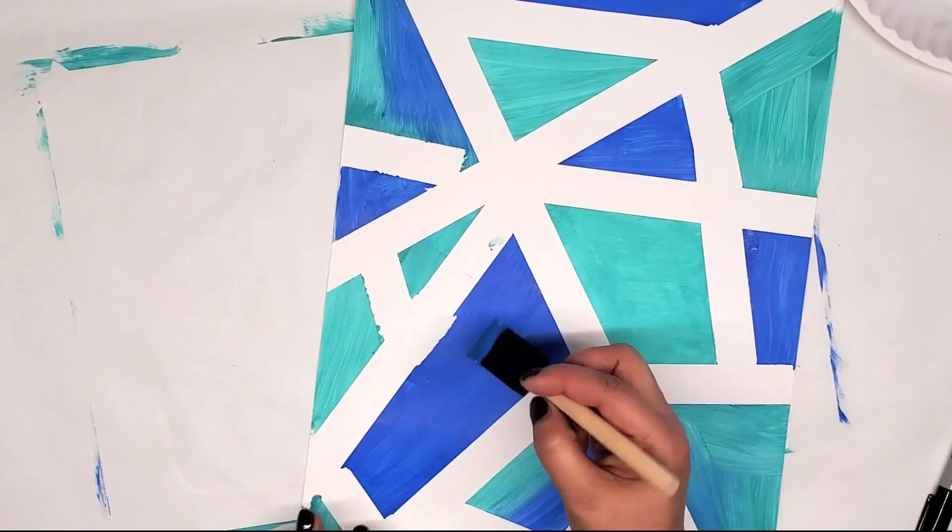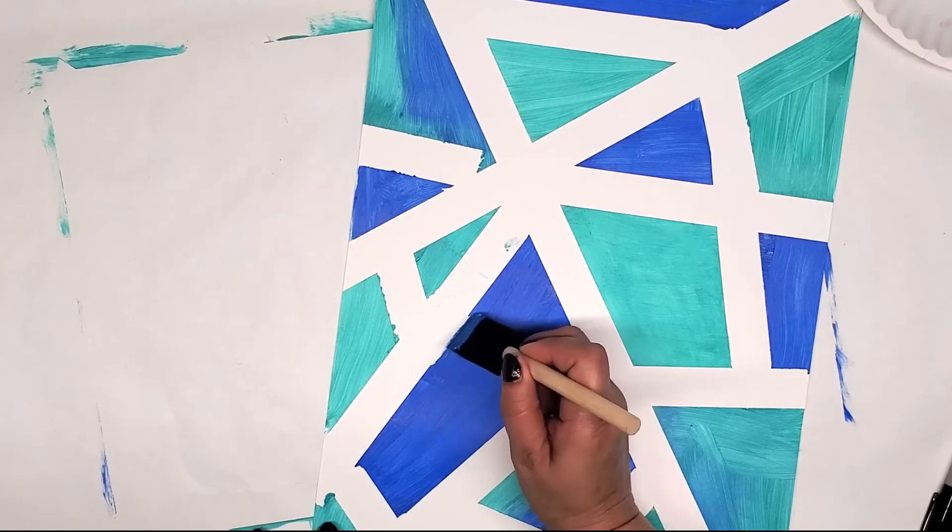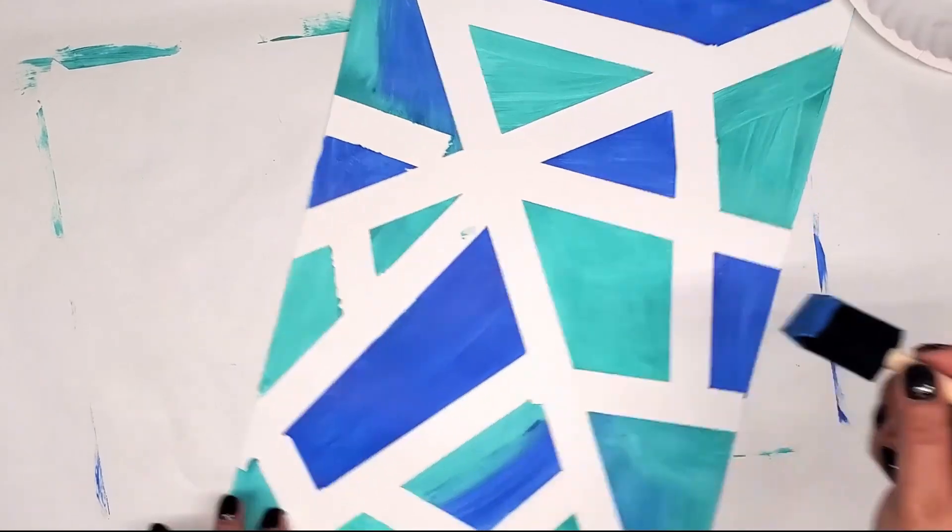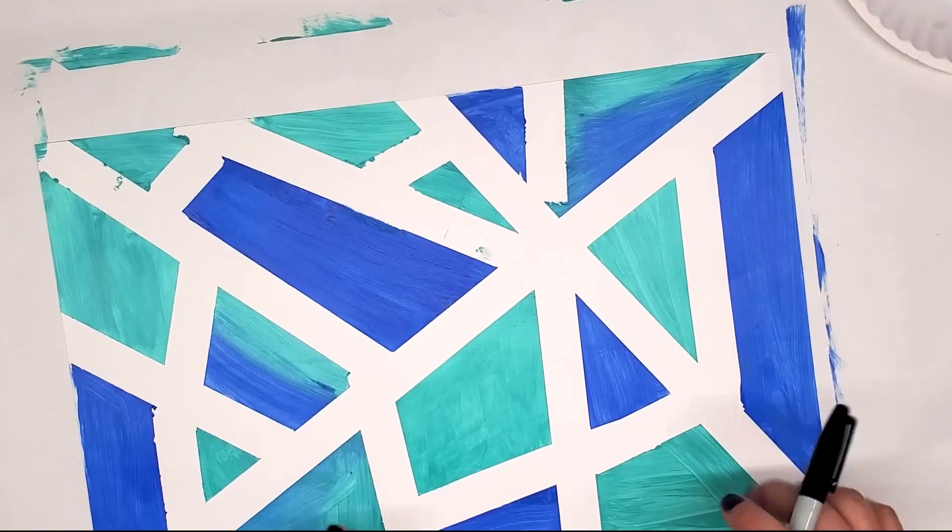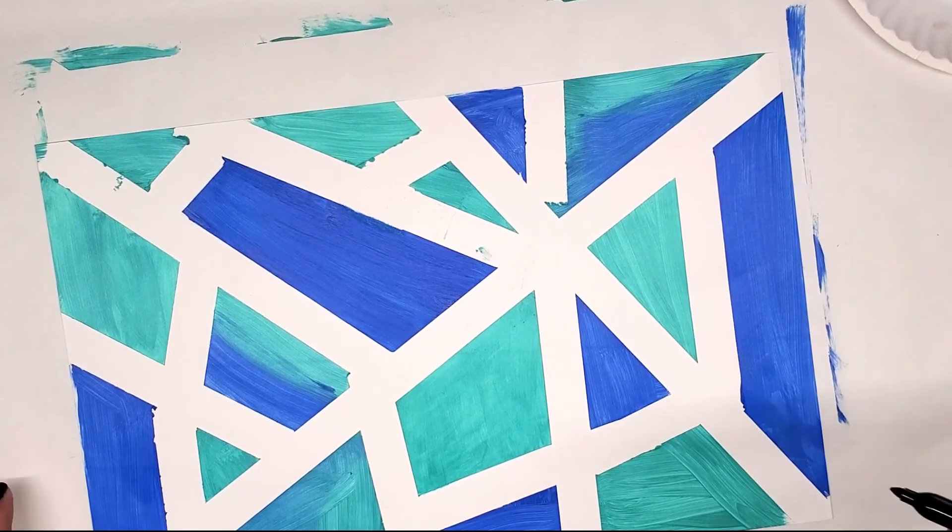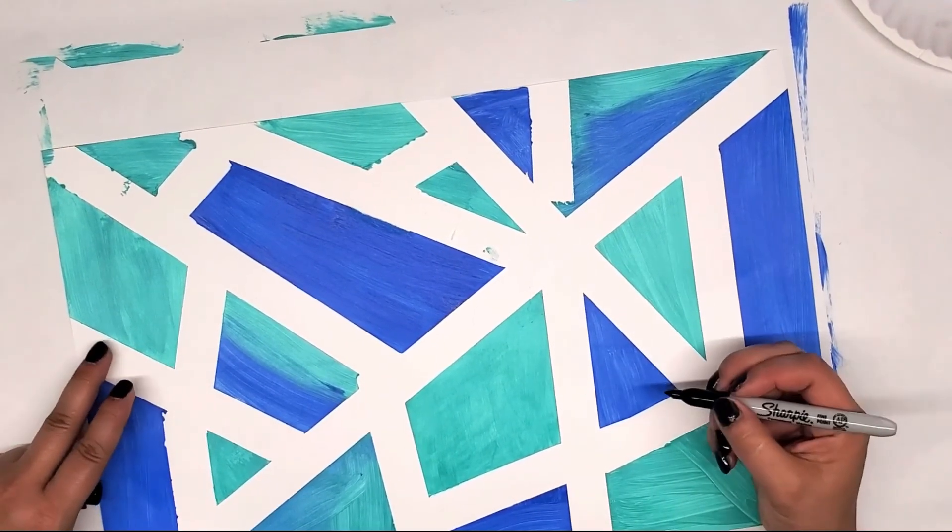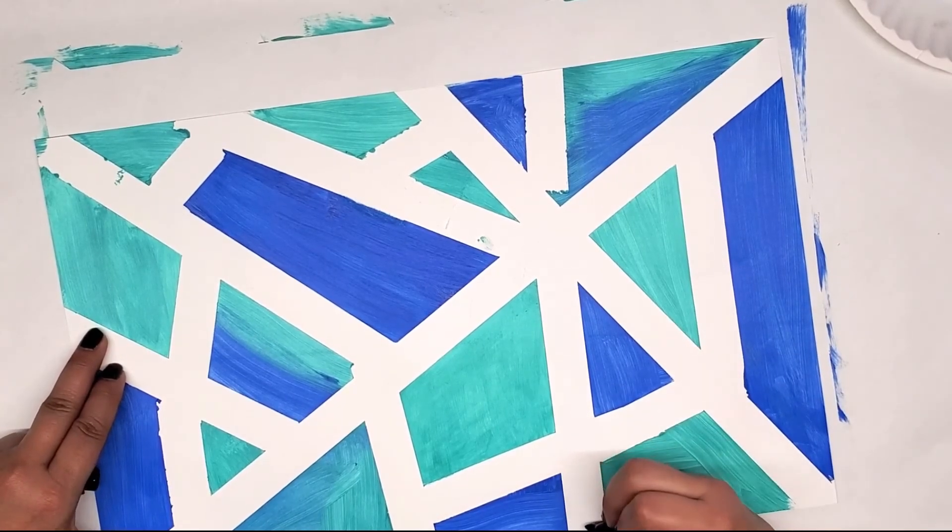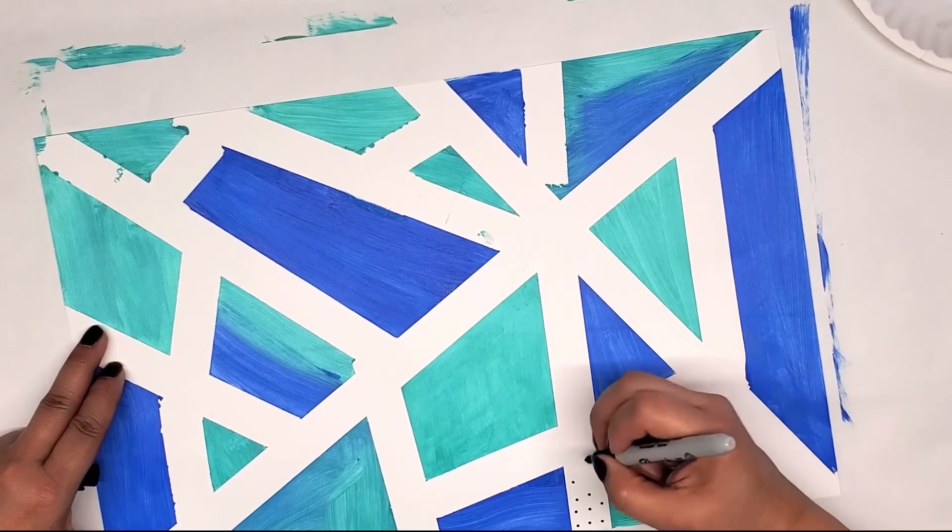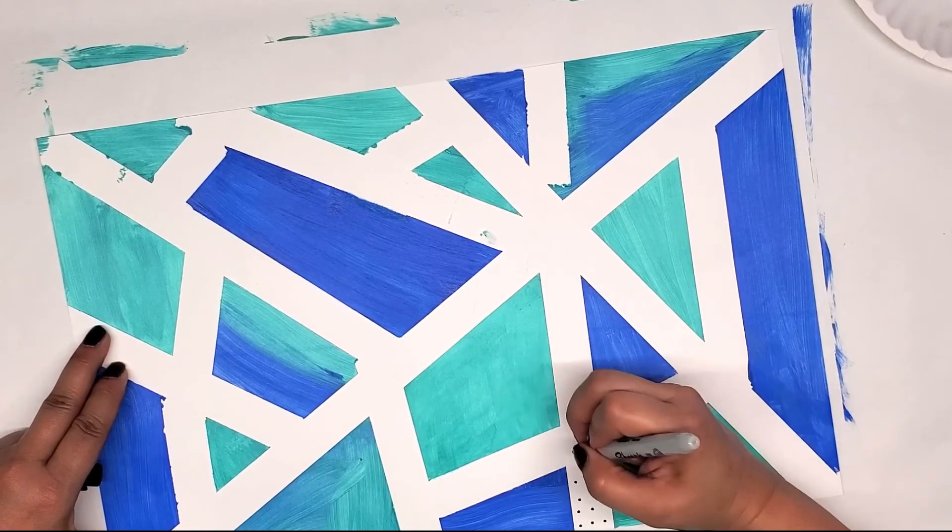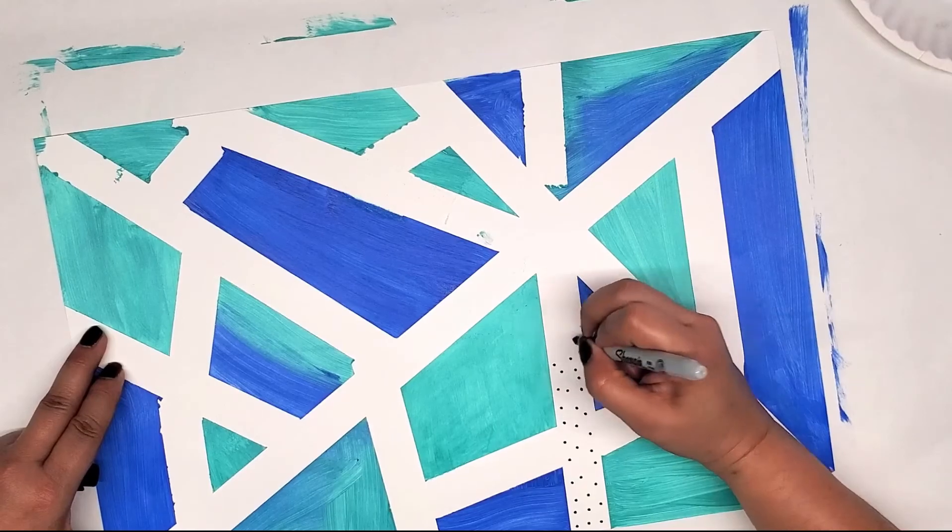Okay, so this is another step that I am doing. You do not have to do this. I ended up filling in this little line right here. You don't have to do that, but I just did that. But another thing that I decided to do was grab my black marker, and you guys should have the one that was in your last art kit. And I'm just going to make dots. You can make any kind of patterns in between those white lines or you can just leave it as is. It's up to you. You decide what your heart wants to do with that.